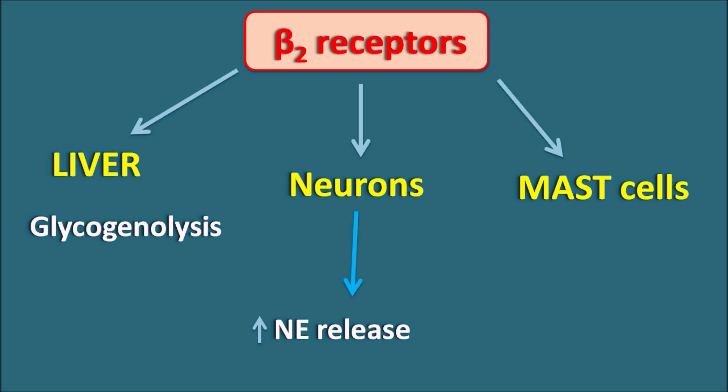Beta-2 receptors can also act on mast cells and inhibit degranulation, thereby decreasing histamine release. Epinephrine can be used for the treatment of anaphylactic shock. Anaphylactic shock is a hypersensitivity reaction where excessive histamine is released, which can be blocked by epinephrine because epinephrine acts through beta-2 receptors, thereby inhibiting degranulation of mast cells.